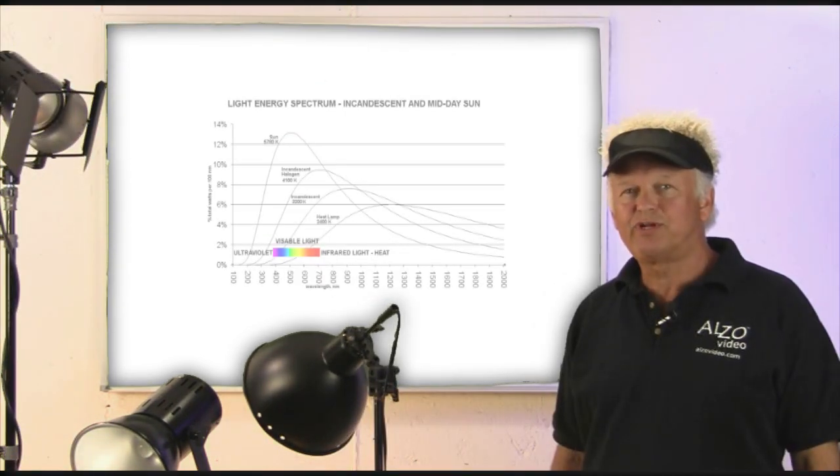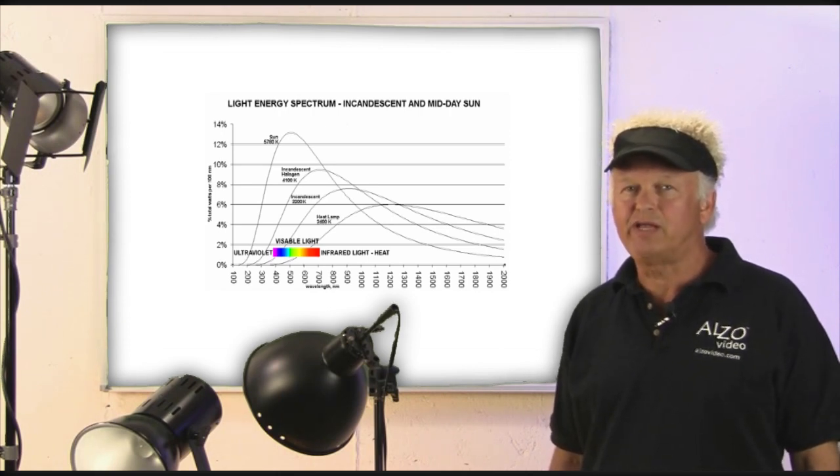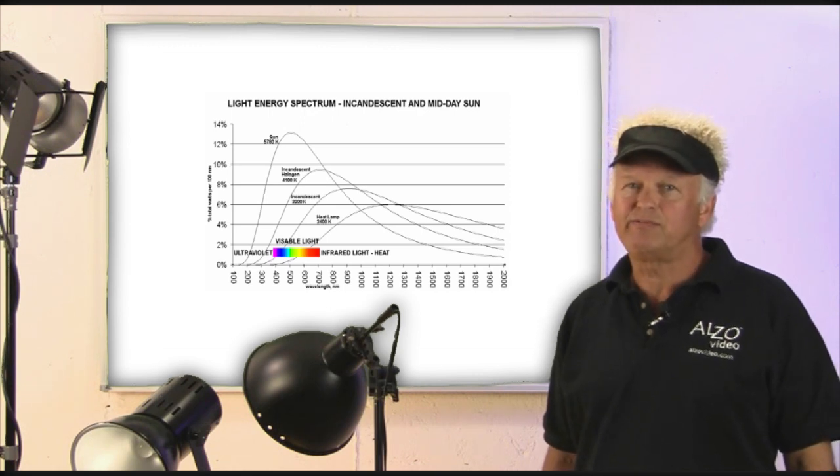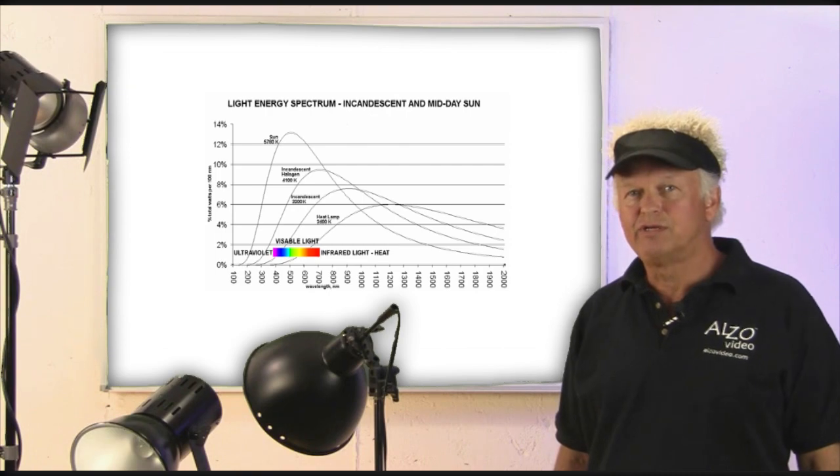This burning process produces a spectrum of light with most of the energy in the infrared and lower red. This produces a color temperature of a range between 2,000 and 3200 degrees Kelvin.